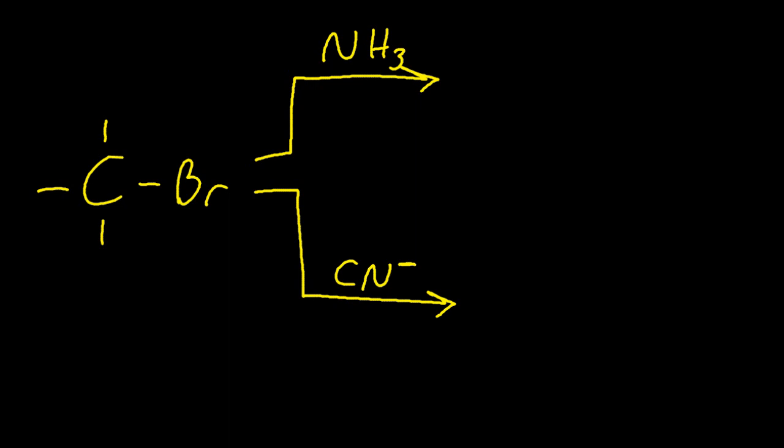So first of all, for the ammonia, you make an amine. So in this case, methylamine or methyl amine, and hydrogen bromide. So the NH3 turns to NH2.